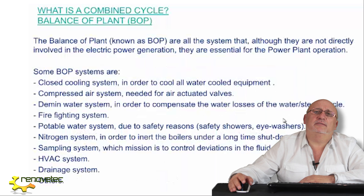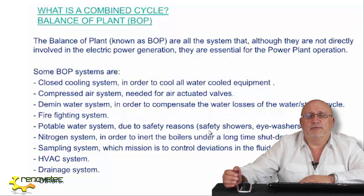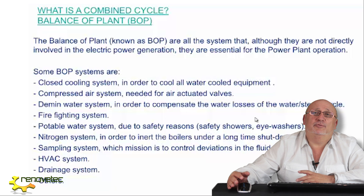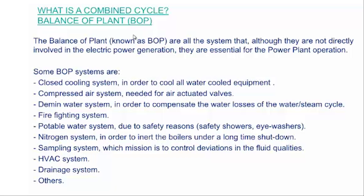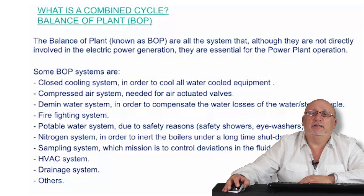There is another assembly of systems necessary to operate the plant. This is called the Balance of Plant, or BOP — a name that could also be called the auxiliary systems. The BOP is composed of many different systems: the closed cooling water system, compressed air, water treatment plant, fire-fighting system, potable water, nitrogen system, sampling system, HVAC system, drainage system, and other systems needed to keep the plant in operation.